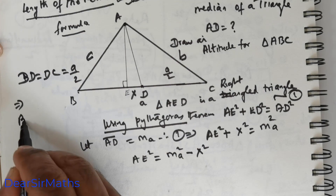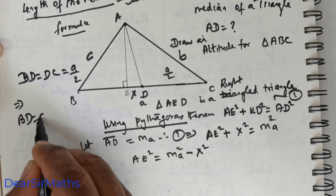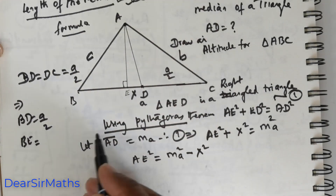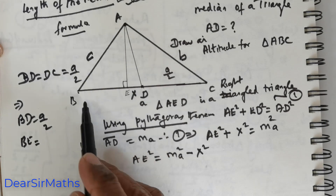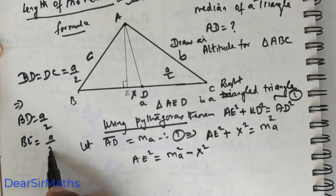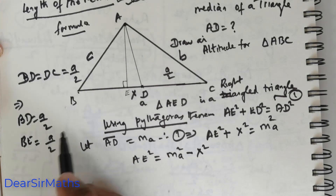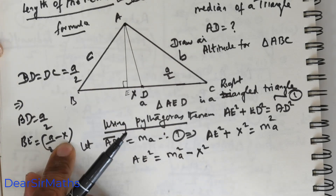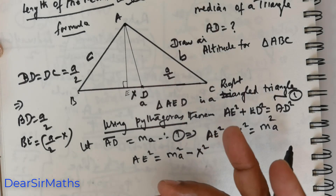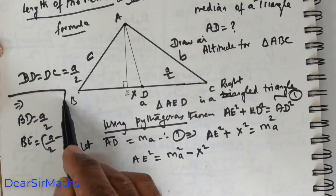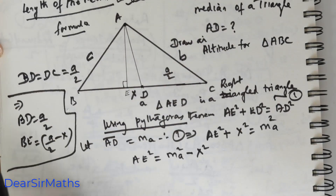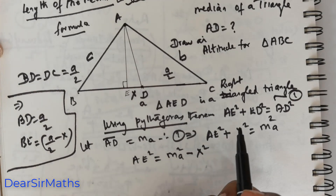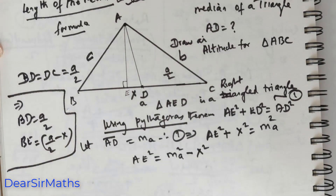Now, this means BD equals A over 2, but I want BE. To get BE, what you need to do is from A over 2, you subtract X. So that is going to be BE, which is A over 2 minus X. This is going to come in handy within a few minutes, so have that in mind.